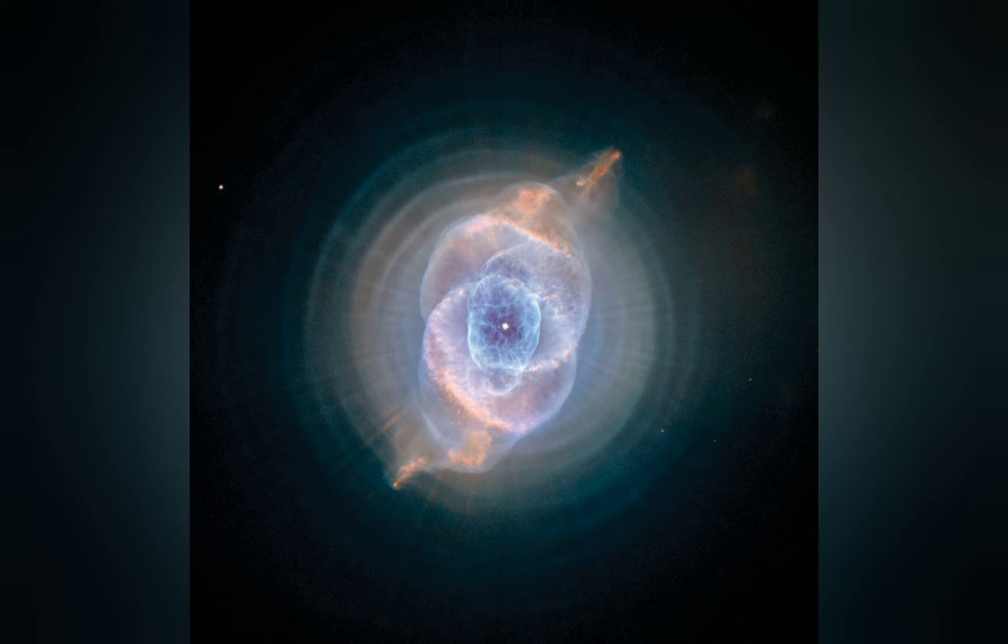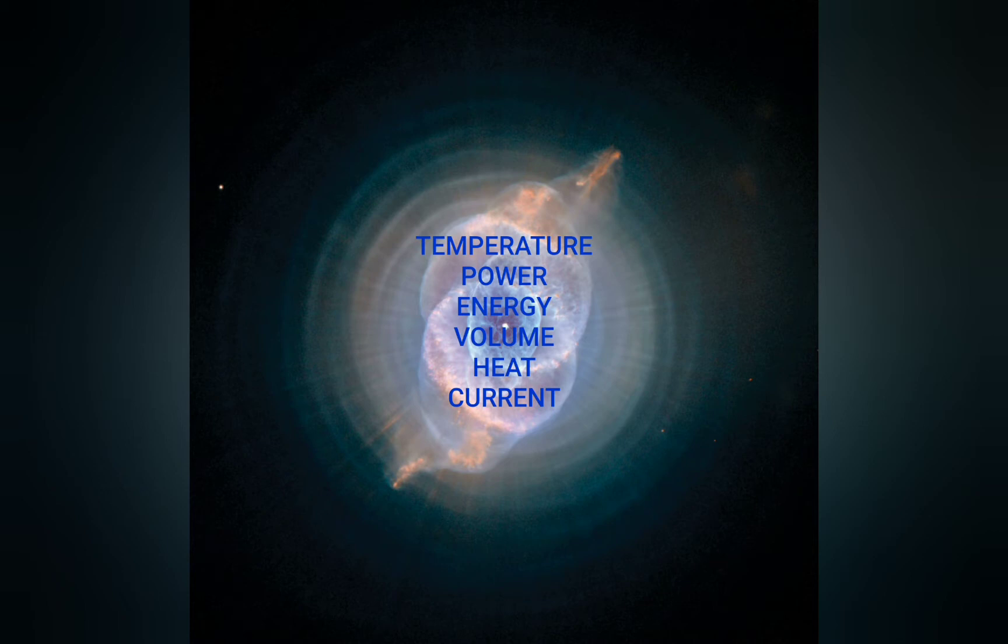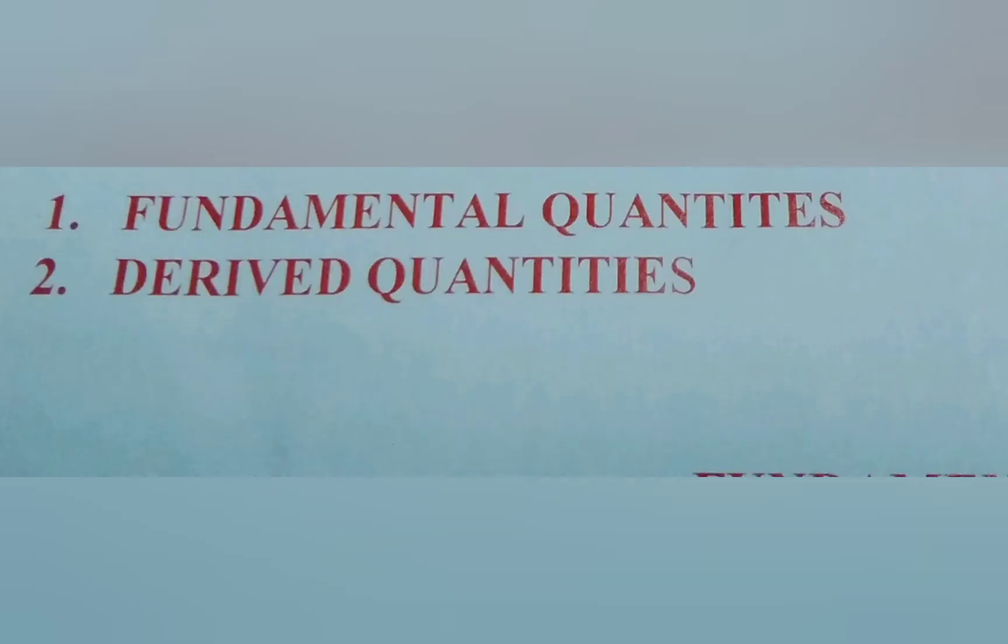The entities that exist around us like temperature, power, energy, volume, heat, current and many others are all called physical quantities and there are thousands of them. These physical quantities can however be divided into two major groups. These include one, fundamental quantities, and two, derived quantities.